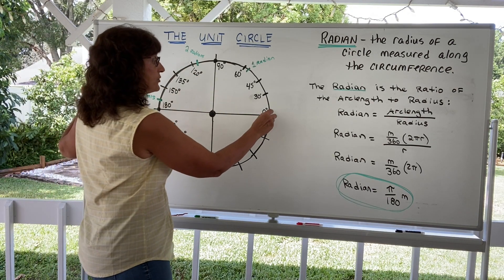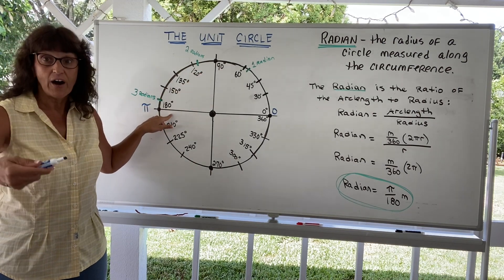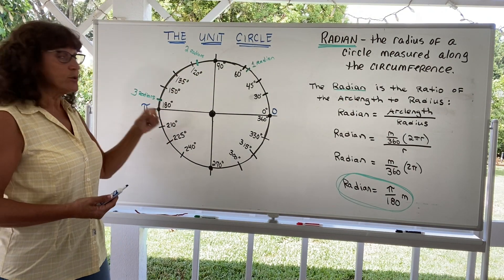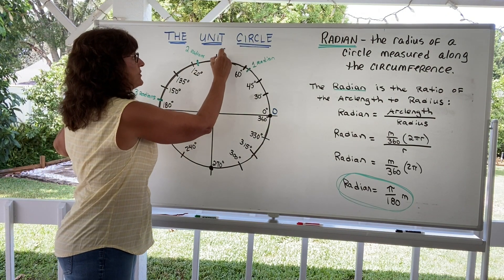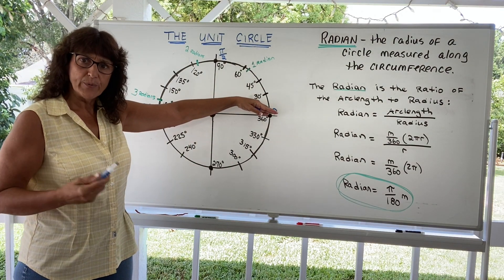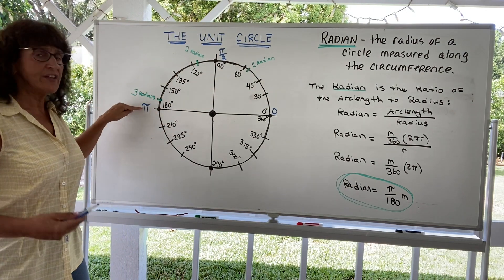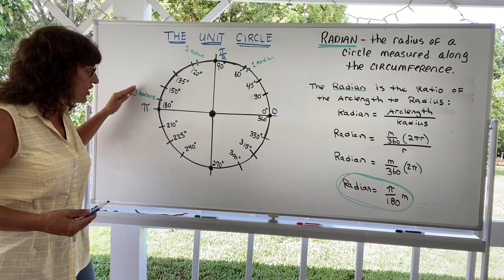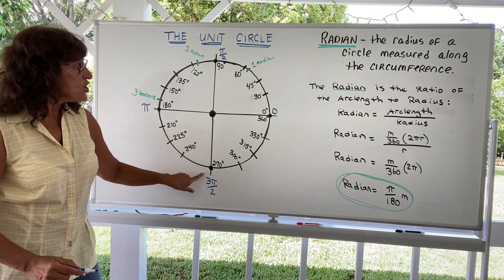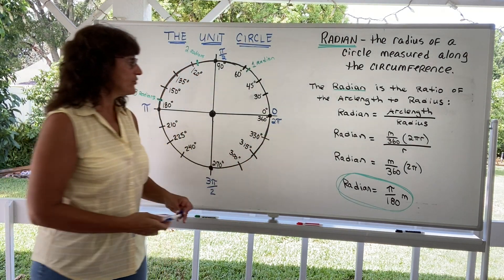Now let's fill in the rest of the radian measures, relating everything to: 180 degrees = pi radians. Starting at zero radians. Going to 90 degrees — that's half of 180, so it's half of pi, which is pi over 2. Every 90 degrees we travel, we go pi/2 radians. So: 90° = pi/2, another 90° gives two-halves pi = pi, another gives 3pi/2 at 270°, and another gives 4pi/4 = 2pi at 360°.